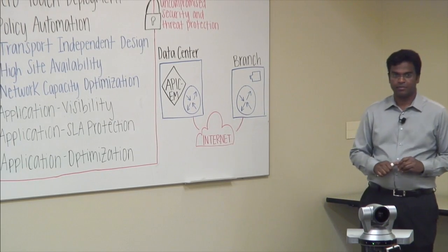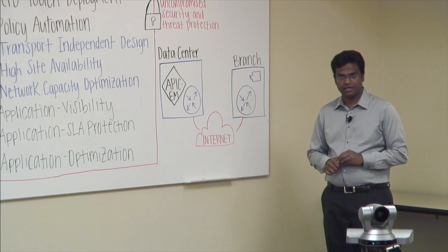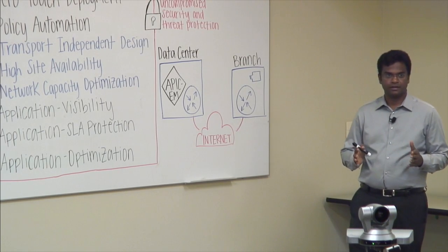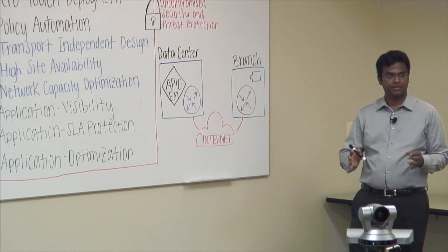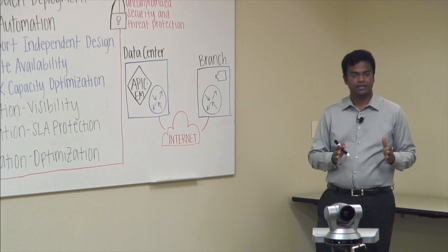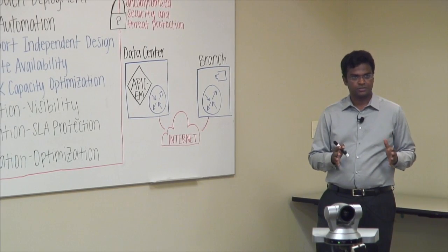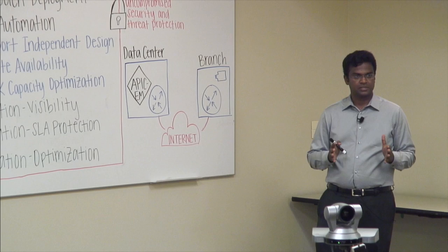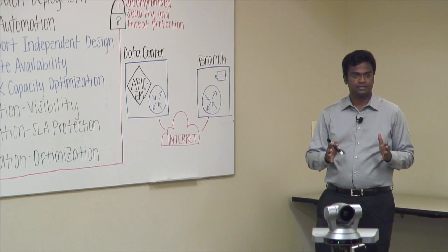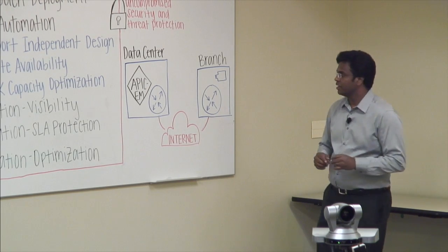Now, zero-touch deployment, if you look at the traditional way of how things are done, you have a router or a device in manufacturing. It goes to the staging facility. And after that, it goes to a routing export that enables connectivity on the remote branch.